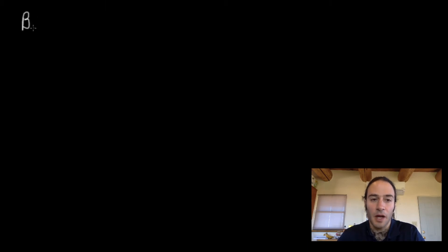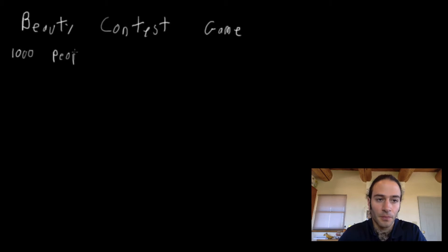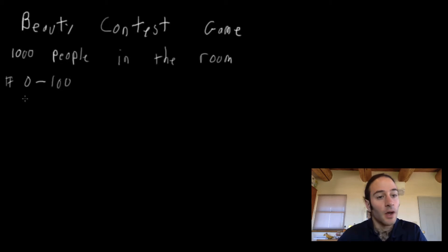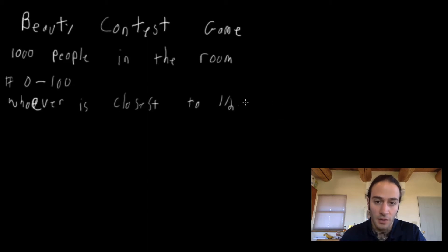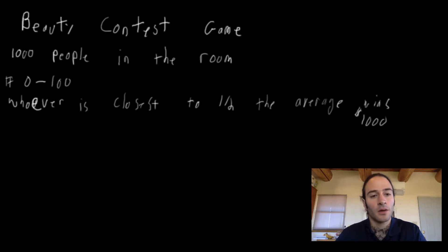In this video, we're going to explicitly apply the level K solution concept to what is known as the beauty contest game. In this game, let's say there are a thousand people in the room, and everybody picks a number between zero and a hundred. That's everybody's strategy. The payoff is: whoever is closest to half the average wins — that one half is key; it can't be closest to the average. Whoever is closest to half of the average wins a thousand dollars. You want to pick a number that is closest to half of the average.